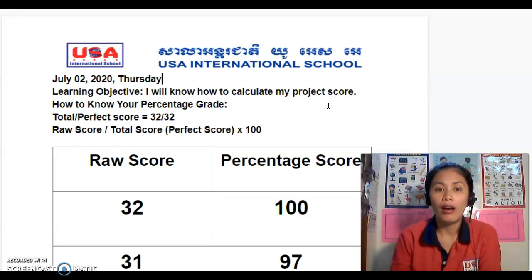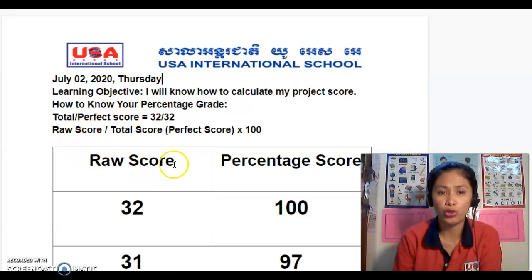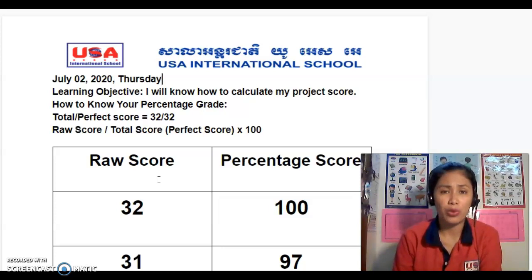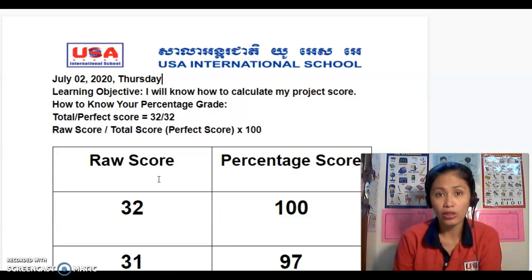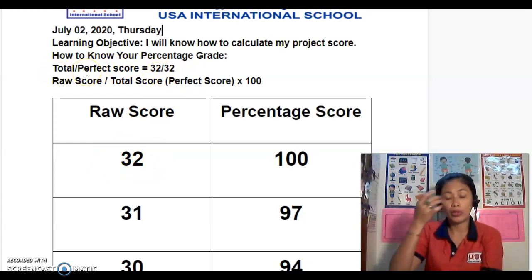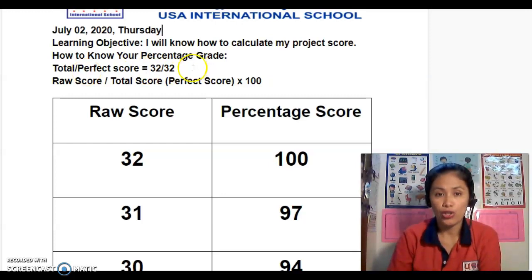This is how you are going to change your raw score. Your raw score is how much score you get across all those criteria. For example, if your topic is related that's four points, if you present really well that's four points. If you do all of those perfectly, your total score will be 32, because that's the perfect score — 32 over 32.